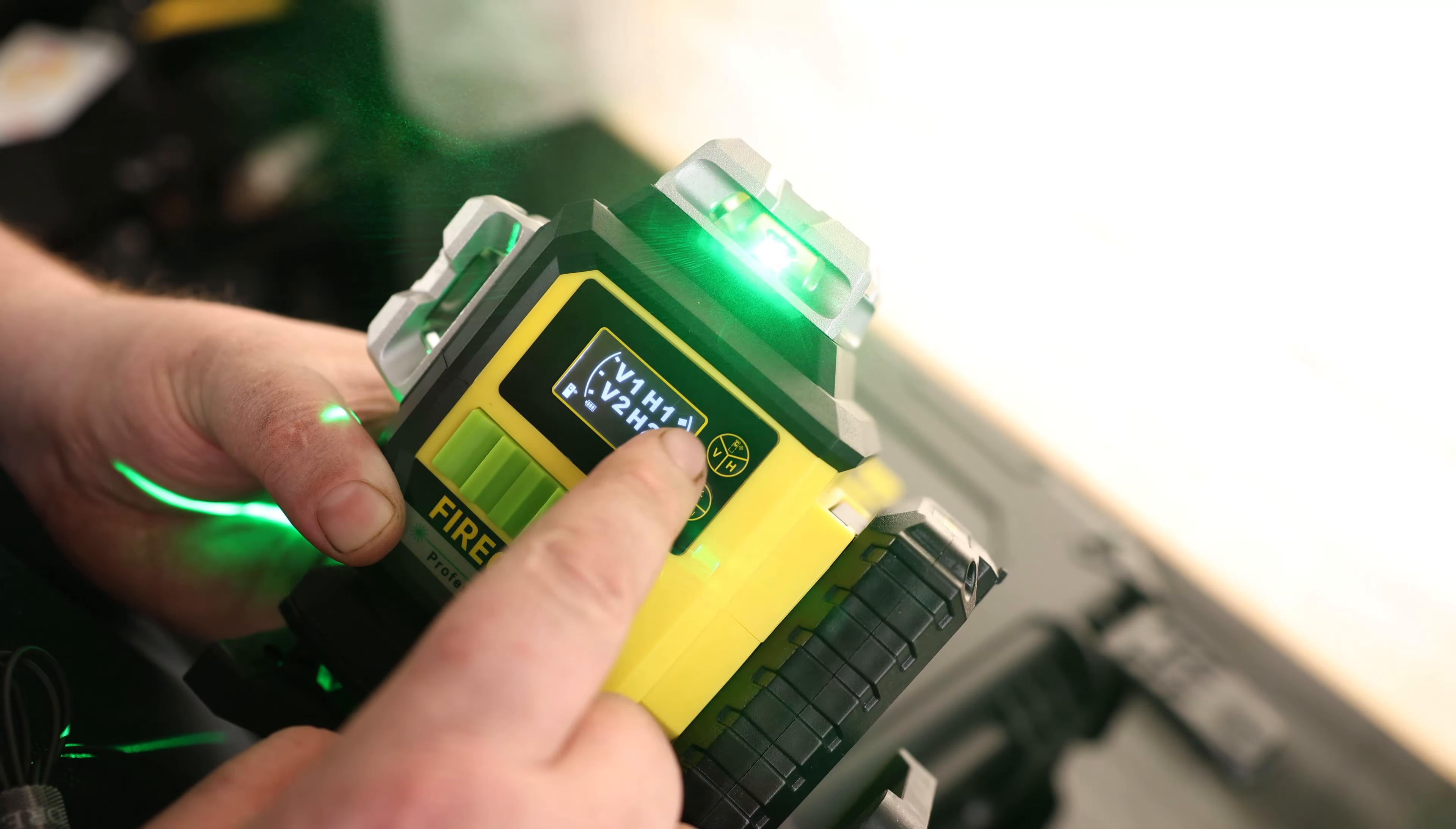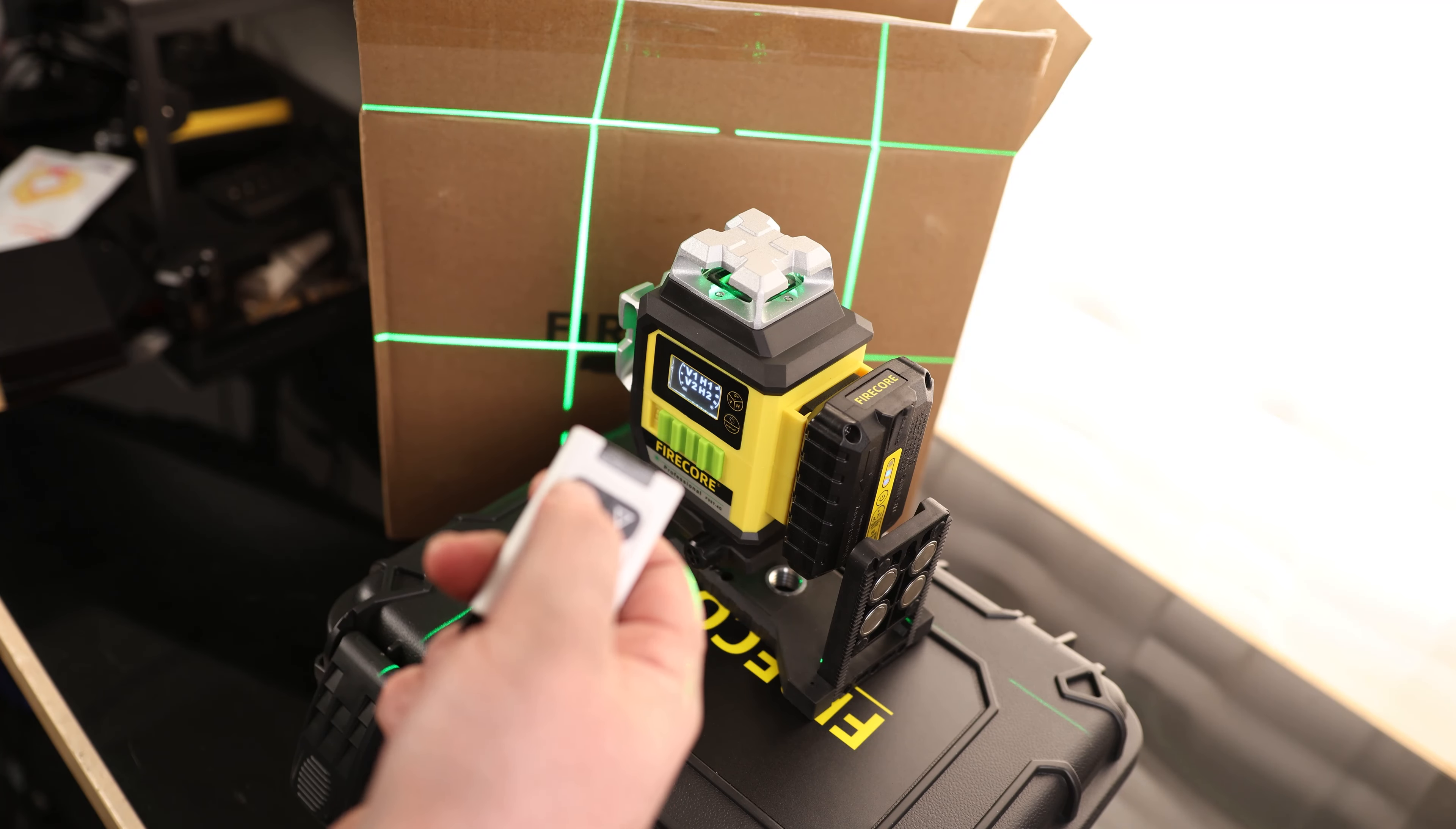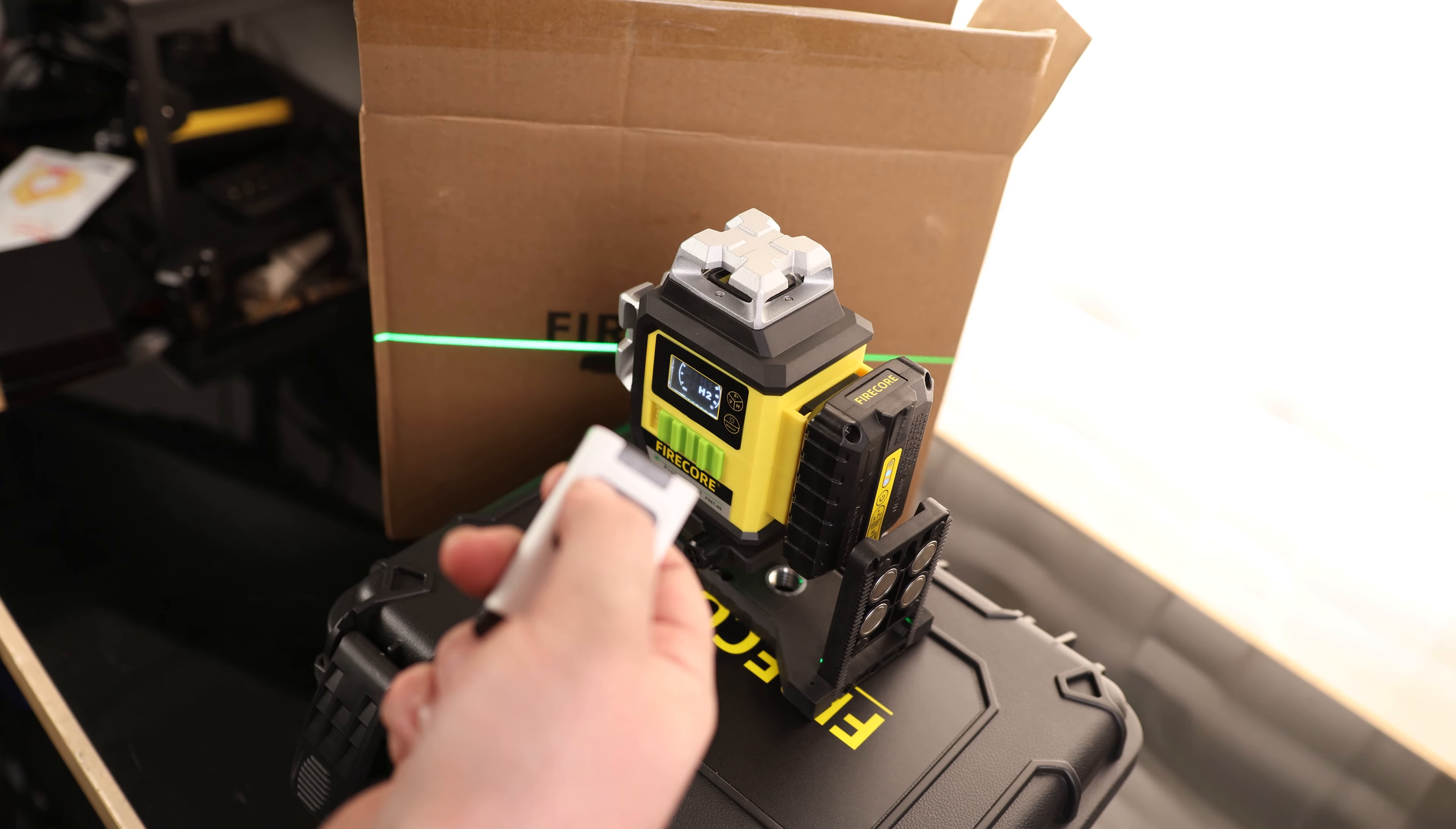So these three bars here on the left, that is the power level. These three bars are the brightness. With the remote, with the up and down arrows, we can adjust which lasers we're going to be using. Or go back. We're going to turn the pulse mode on and off. And we can adjust the brightness.